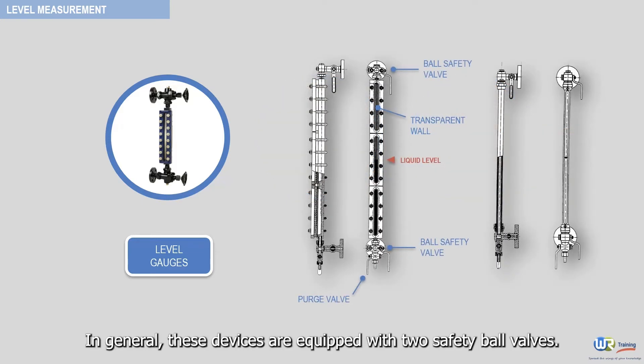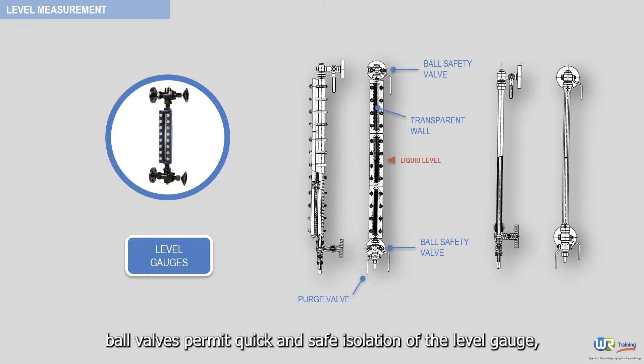In general, these devices are equipped with two safety ball valves. The safety ball valves permit quick and safe isolation of the level gauge in case the glass breaks. Keep in mind here, special attention is to be given to the opening of these valves.